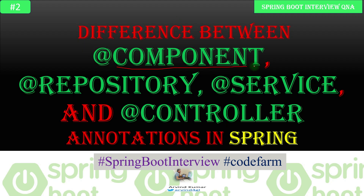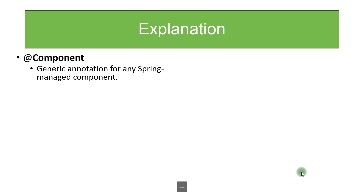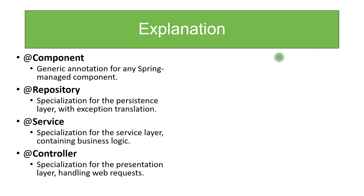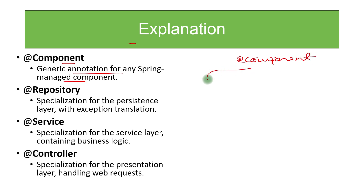What is the difference between @Component, @Repository, @Service, and @Controller annotations in Spring or Spring Boot? Let's go over some bullet points about these. The @Component annotation is a generic annotation for any Spring managed component. You can say @Component is at the top, and inside that we have @Repository, @Service, and @Controller.